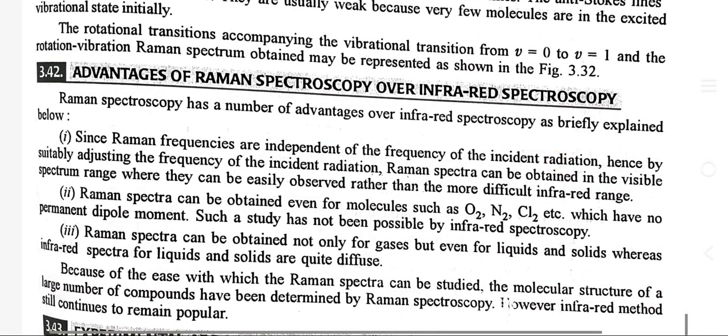Raman spectra can be obtained not only for gases but even for liquids and solids, whereas infrared spectra of liquids and solids are quite diffuse. Because of the ease with which Raman spectra can be studied, the molecular structure of a large number of compounds has been determined by Raman spectroscopy, though the infrared method still continues to remain popular. Thank you.